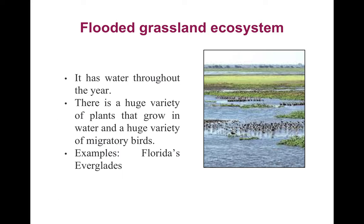Flooded grassland ecosystems are characterized by the presence of water throughout the year. There is a huge variety of aquatic plants and migratory birds, as well as resident birds. Migratory birds come from other places and spend part of their lives here. An example is Florida's Everglades.